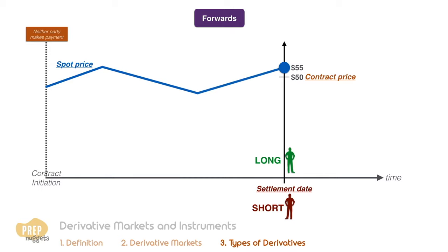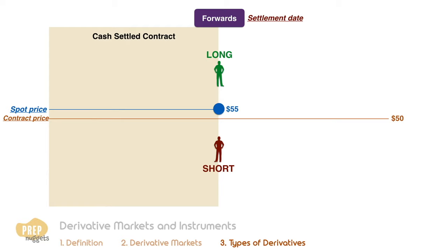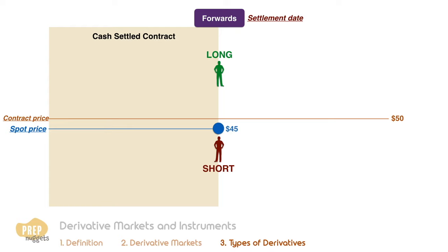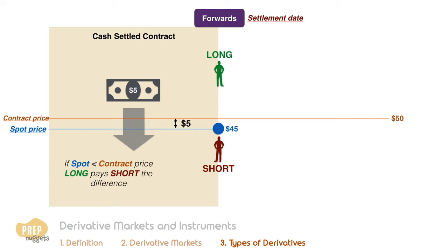What happens on the settlement date depends on what is specified in the forward contract. In a cash settled forward contract, the difference between the contract price and spot price is calculated. If the spot price is higher than the contract price, the short has to pay the long the difference. Conversely, if the spot price is lower, the long has to pay the short the difference. Cash settled forward contracts are also known as contracts for differences or non-deliverable forwards.